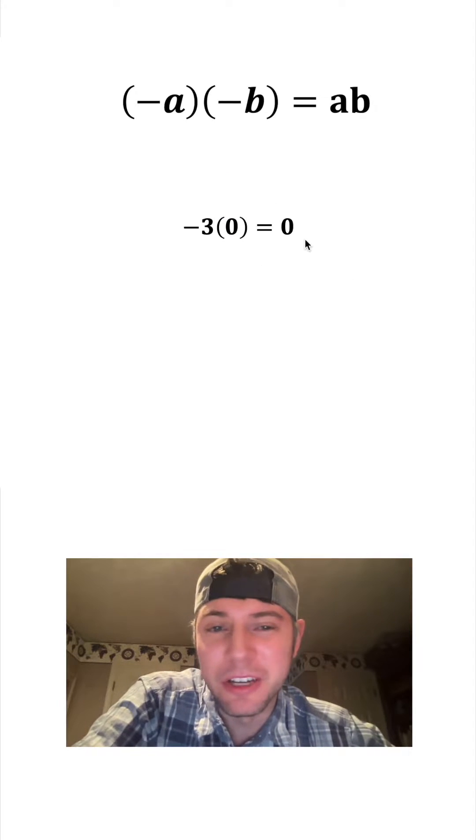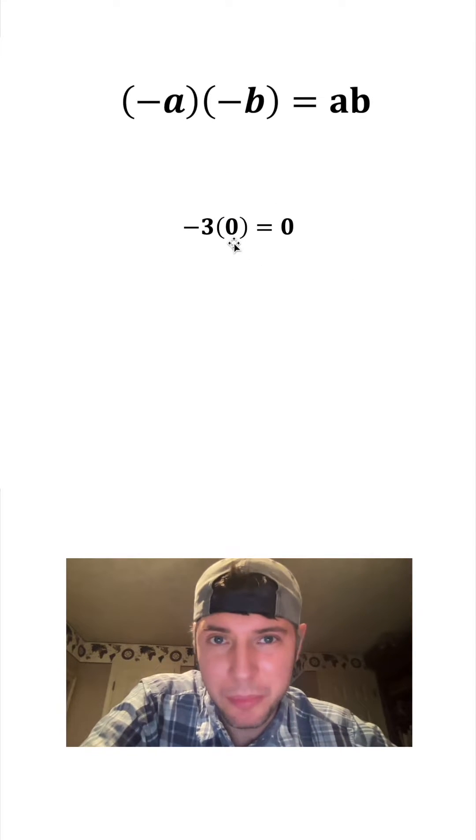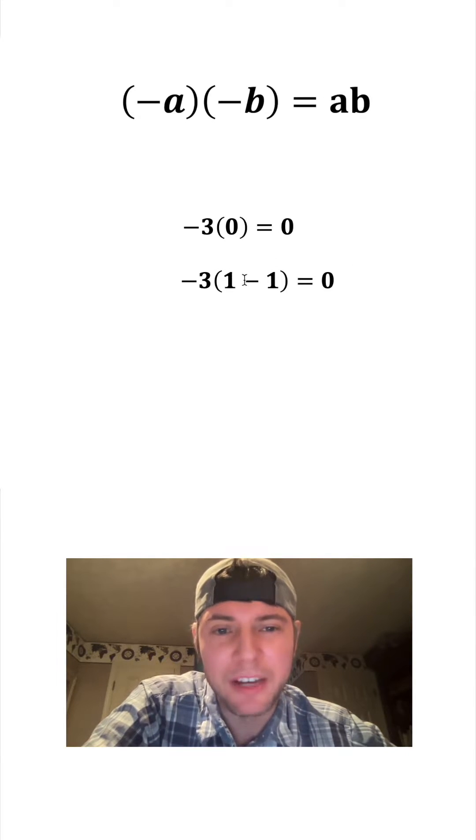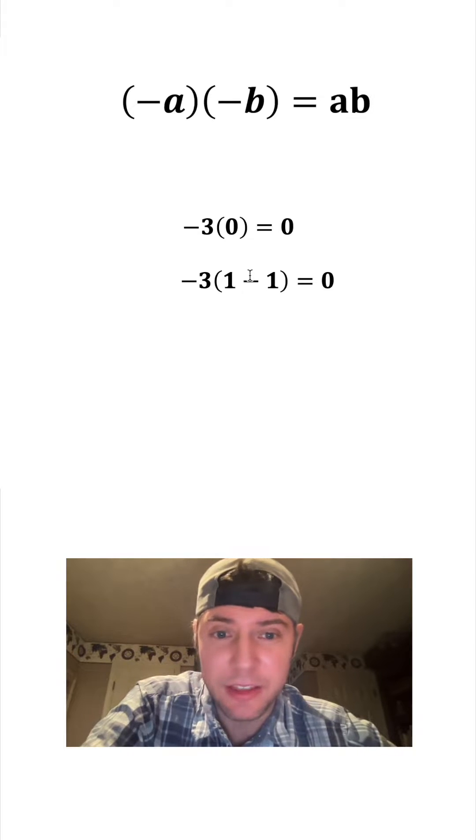So next, we have negative 3 times 0 equals 0. That's the multiplicative property of 0. It brings everything to 0. If I rewrite the inside of this parentheses as 1 minus 1, I haven't changed anything. This is still negative 3 times 0, which will still equal 0.